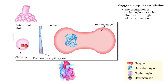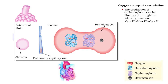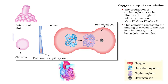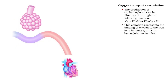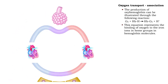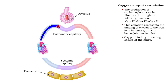The production of oxyhemoglobin can be illustrated through the following reaction. Oxygen binds with deoxyhemoglobin to form oxyhemoglobin and hydrogen ions. This equation represents the binding of oxygen to the iron ions in heme groups in hemoglobin molecules. Oxygen association occurs at the lungs.